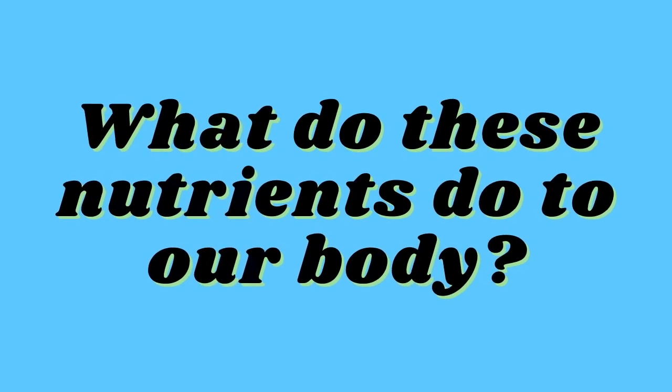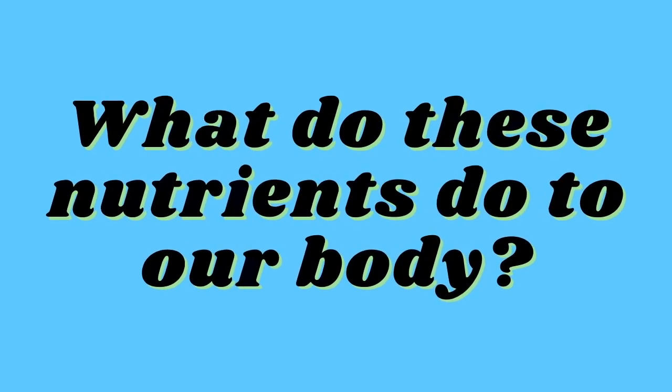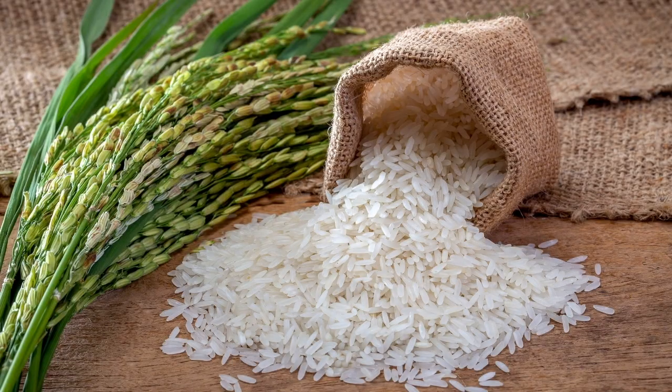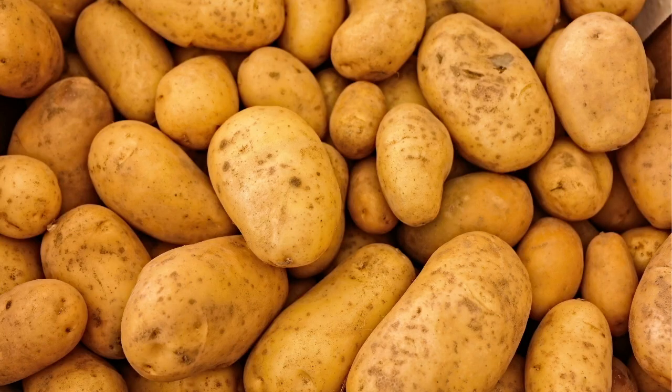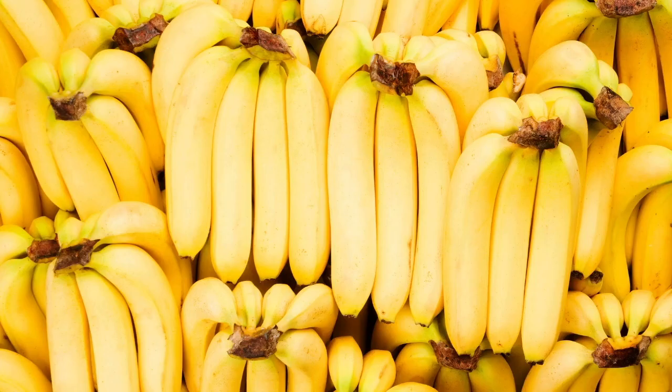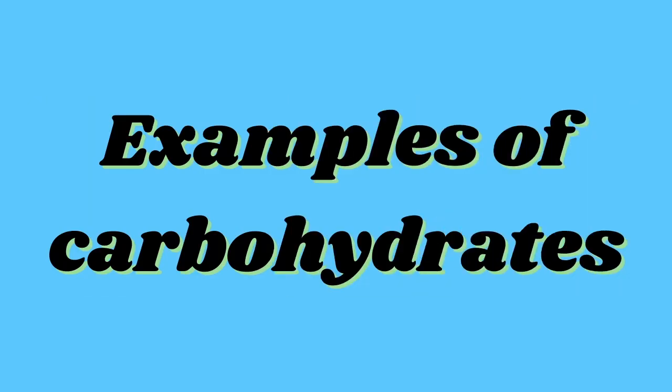What do these nutrients do to our body? Carbohydrates provide us with energy. Starch, sugar, and glucose, which are present in beet, maize, rice, potato, honey, banana, etc., are rich sources of carbohydrates.